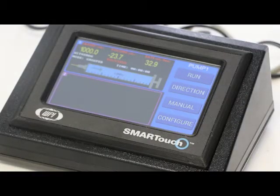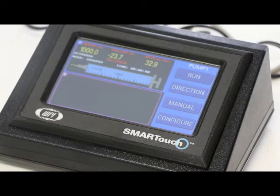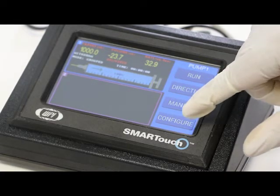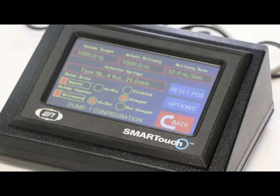We're going to show you how to set the home position of the plunger on the injector nano-liter 2020. First thing we do is hit the configure screen, configure button. We hit the reset position.